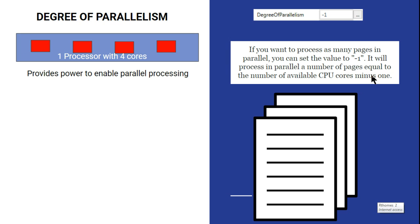If only three logical processors are available, then with minus one, it will not utilize all three. It will take the available CPU cores minus one — so from three available, it subtracts one, leaving two. It will utilize two logical processors from your laptop and in parallel try to convert the document into text format.